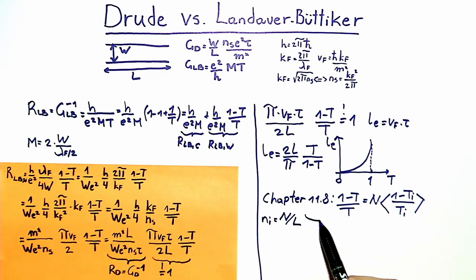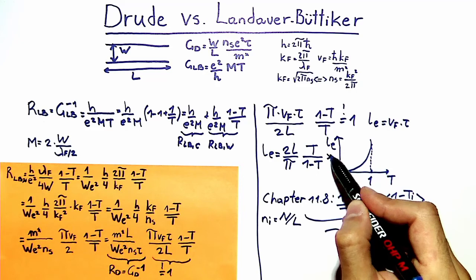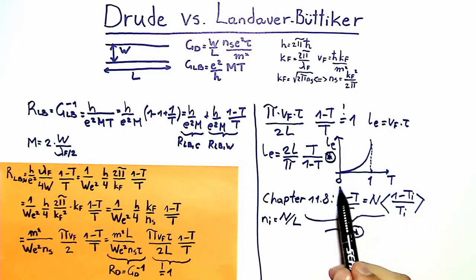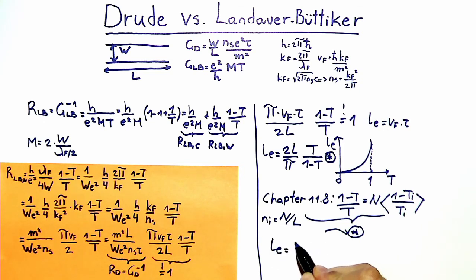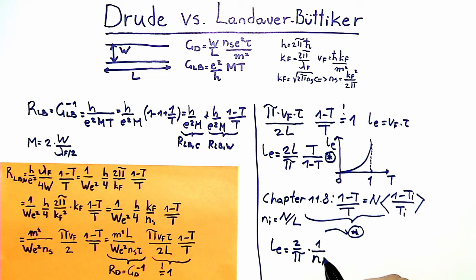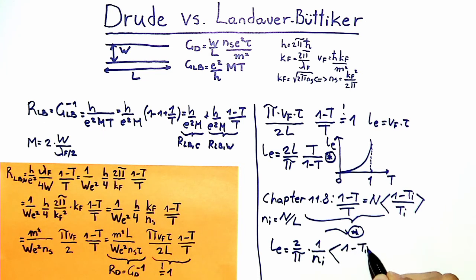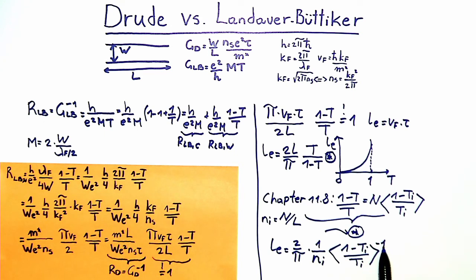Taking these two expressions and inserting them into the formula for the mean free path, we can write L_e as (2/π) multiplied by the inverse scatterer density, multiplied by the inverse of ⟨(1 − t_i)/t_i⟩. This clearly shows that the mean free path is inversely proportional to the density of scatterers in the wire.